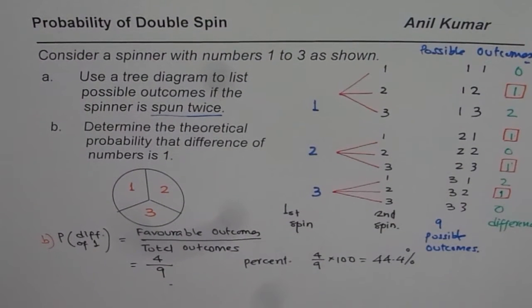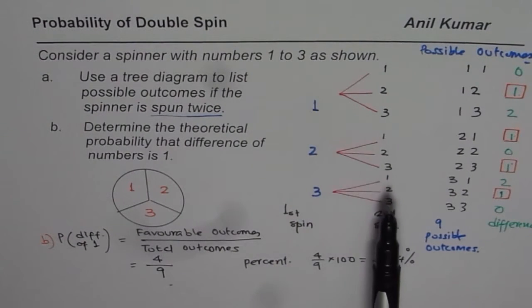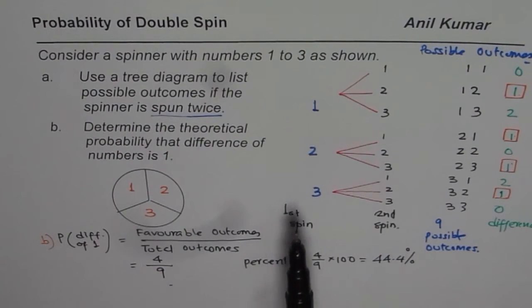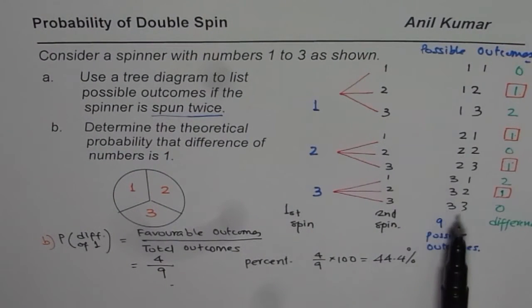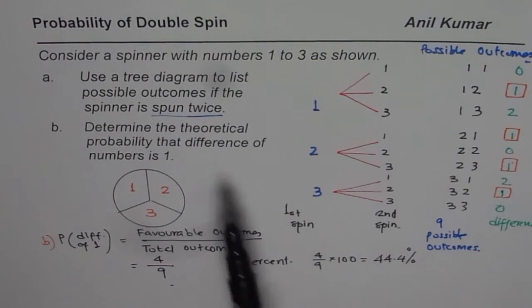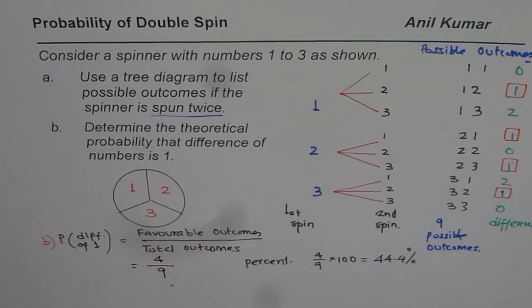So that is how we could answer this question. I hope with this video, you have understood the process of making a tree diagram for two spins. Also finding the possible outcomes in part B helps you to find the probability using your tree diagram. I hope that helps. Thank you and all the best.